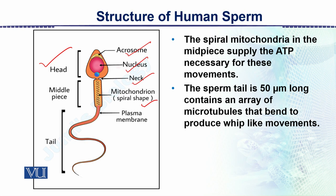The sperm's movement is very peculiar — it moves through the reproductive tract with the head in front, using a wriggling tail movement that provides thrust. In addition to this, the tubular system of the female reproductive tract also helps in moving the sperm upward toward the site of fertilization.